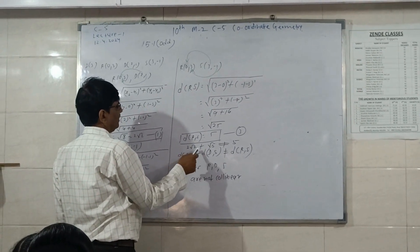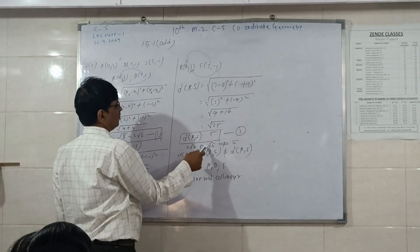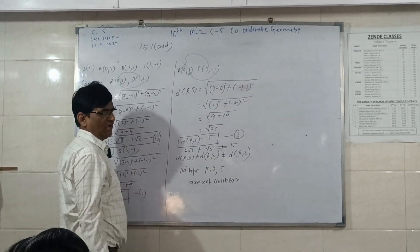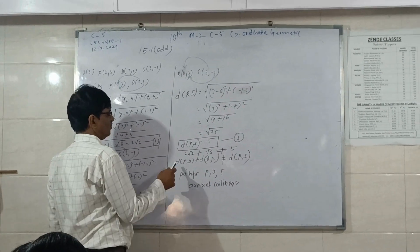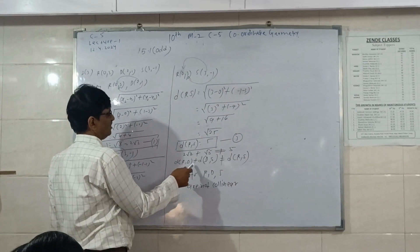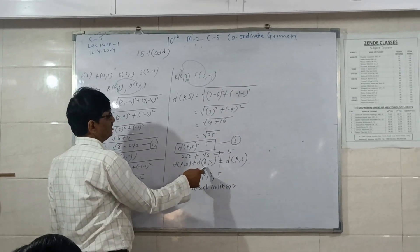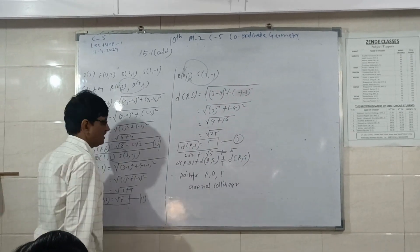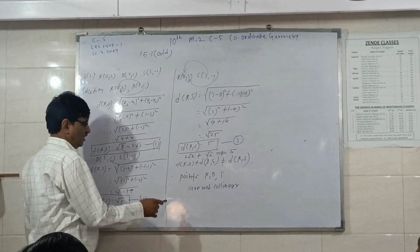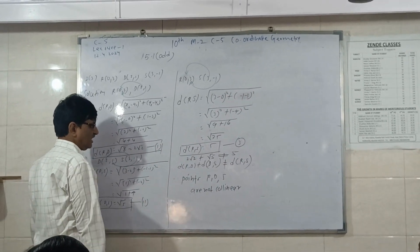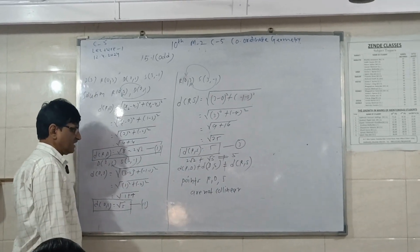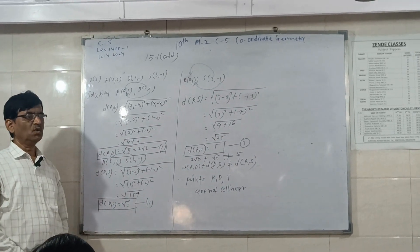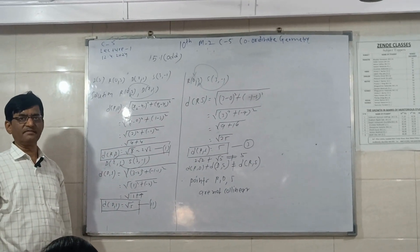So root 2 plus root 5 is not equal to 2 root 5. Therefore, distance RD plus distance DS is not equal to distance RS. Therefore, points R, D, S are not collinear.